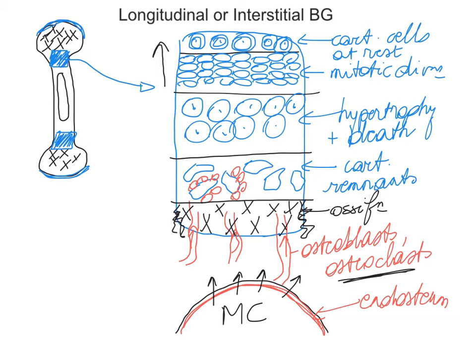Earlier I said that in the zone where mitotic divisions occur, that's where our bone is lengthening — which initially means the epiphyseal plate is widening. We need to make sure that the epiphyseal plate doesn't get too wide. As we replace the cartilage tissue here with bone tissue, we add cartilage tissue on the epiphyseal side but take it away on the medullary side. This is how longitudinal bone growth, also called interstitial bone growth in children, occurs.